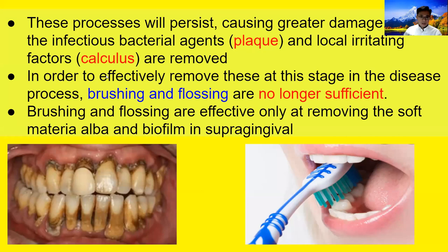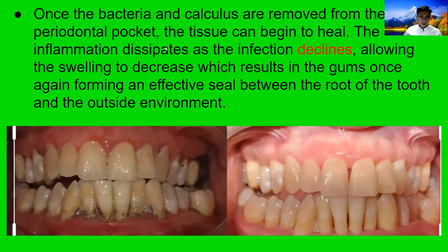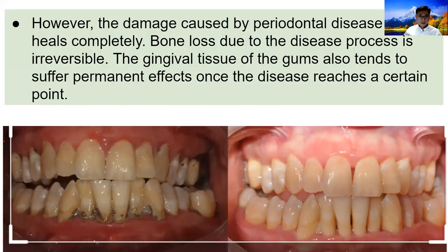Once the bacteria and calculus are removed from the pocket, the tissue begins to heal, the infection declines, the swelling reduces, and the seal of the root and tooth starts to form again. This is the before and after — you can see the gum tissue looks a lot better. This is why you need the dentist involved when you have a severe gum problem. Just remember that after the damage caused by periodontal disease, it never heals completely — there's no possibility to fully reverse the situation.